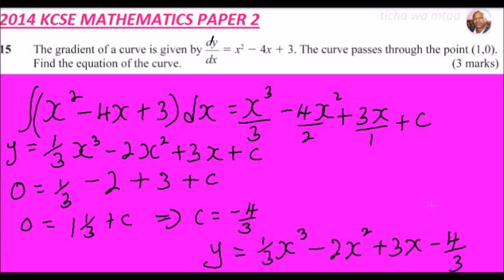This question is awarded three marks. What is being tested is whether you know that when we differentiate a function we get the gradient function, so the reverse — integration — gives you the function. You also need to know how to find c given the point the curve passes through, just as we have done.